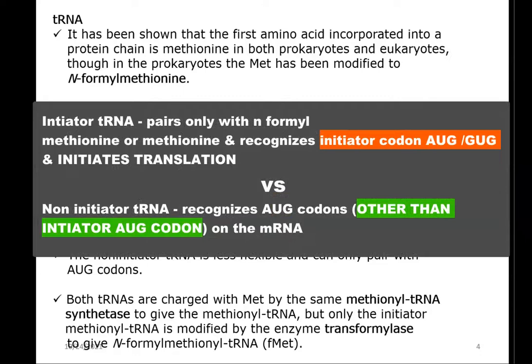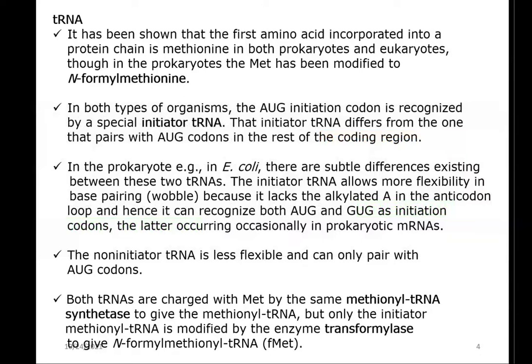The initiator tRNA differs from the tRNA that pairs with AUG codons present in the rest of the coding regions of the mRNA. The AUG initiation codon is specifically recognized by the initiator tRNA, whereas other methionine-related tRNAs recognize AUG codons in the rest of the coding regions. In E. coli, there are notable differences between initiator tRNA and normal tRNA: initiator tRNA binds specifically to N-formyl methionine, while normal tRNA may bind to methionine or other amino acids.